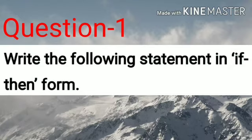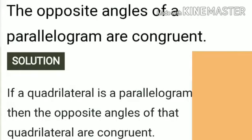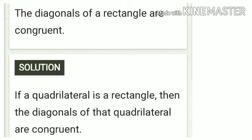The first question is: the opposite angles of a parallelogram are congruent. A parallelogram is a quadrilateral. So your answer is: if a quadrilateral is a parallelogram, then the opposite angles of that quadrilateral are congruent. If with the first sentence and then with the second sentence.